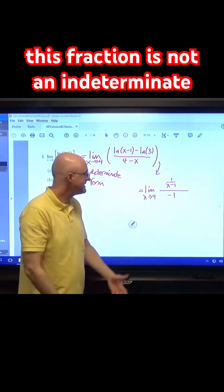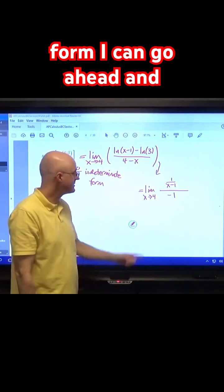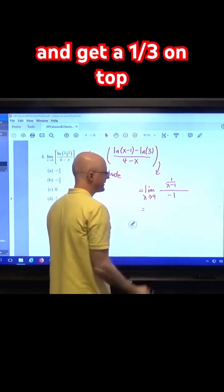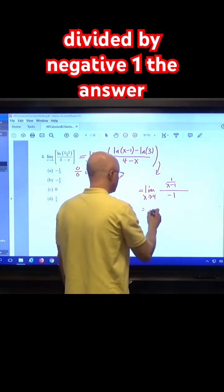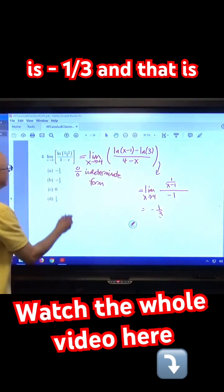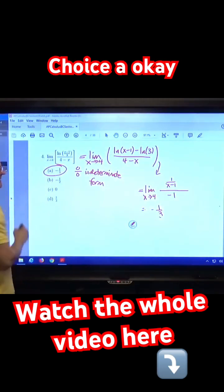Now, this fraction is not an indeterminate form. I can go ahead and plug in x equals 4 right away and get a 1 third on top divided by negative 1. The answer is negative 1 third. And that is choice A.